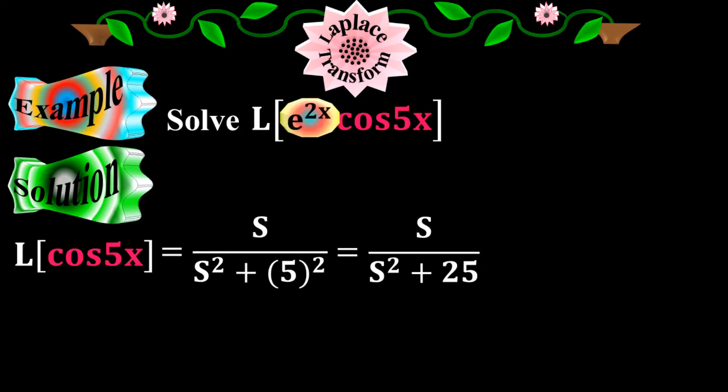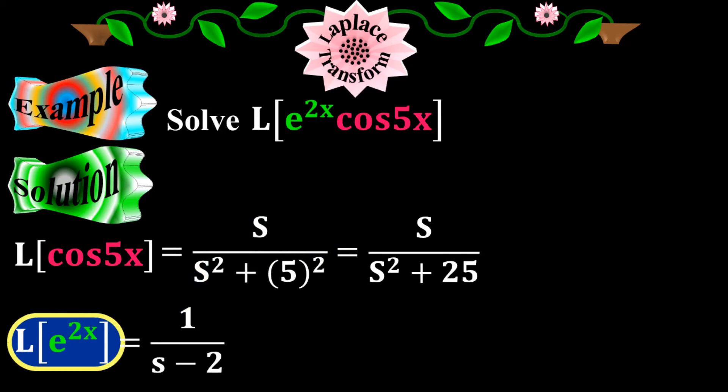Now I'm going to take the exponential function e to the 2x, where the Laplace of e to the 2x equals to 1 over s minus 2. I applied the second elementary condition here where my constant a is 2. So Laplace of e to the 2x equals to 1 over s minus 2.